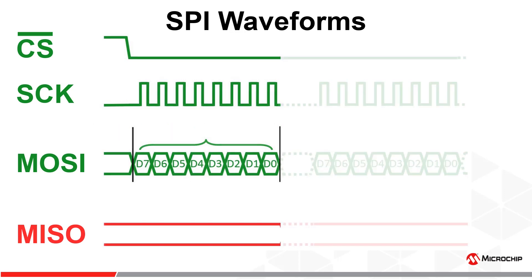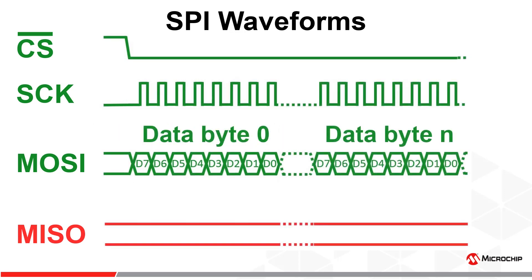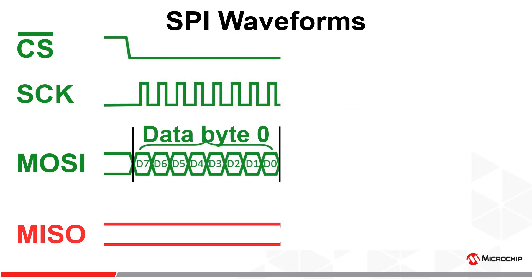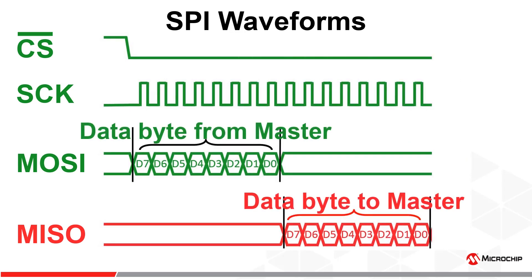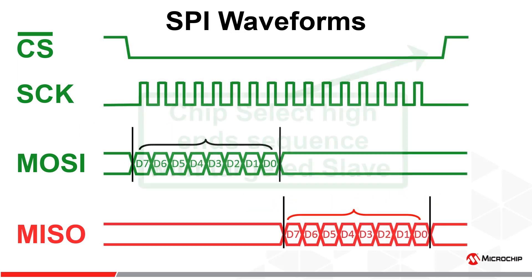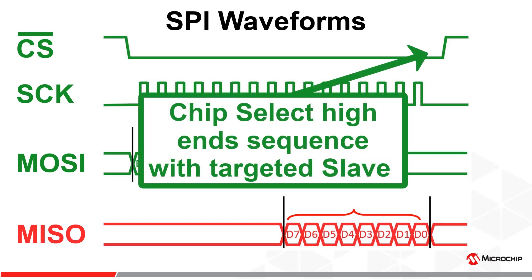The number of data bytes transmitted is dependent on the transaction type and the design of the slave device being accessed. When the master requests data from the slave, the slave will transmit the requested data to the master on the MISO signal. Once the transaction is complete, the master terminates the SPI transaction by driving chip select high to deselect the slave device.